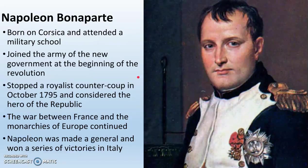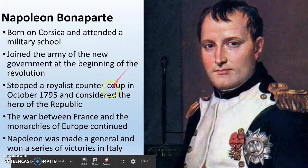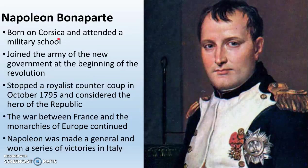So at this point, France is a republic. In comes Napoleon Bonaparte. This is the handsome Napoleon over here on the right. Napoleon is born on the island of Corsica, which is an island in the Mediterranean Sea, generally considered part of Italy, though it does still belong to France, where Napoleon attended a military school. Napoleon is actually Italian — he is not French. He joins the army of the new republic at the beginning of the French Revolution, and he is shortly thereafter named the hero of the republic because he stops a royalist countercoup in October 1795.